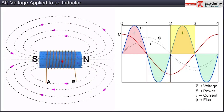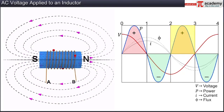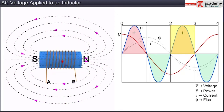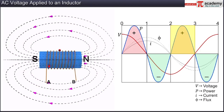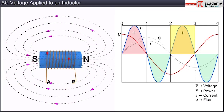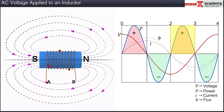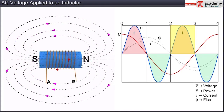During the third time interval 2-3, the values of both current and voltage are negative. Since the current has become negative in this interval, the flux passing through the coils changes, setting up a reverse magnetic field as shown in the figure. In this case, the current enters the inductor coil at B and leaves at A. As the current and voltage are both negative, it means the power is positive. Hence, energy is being absorbed by the inductor.